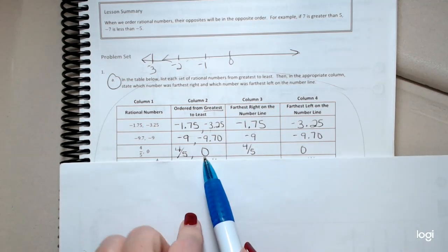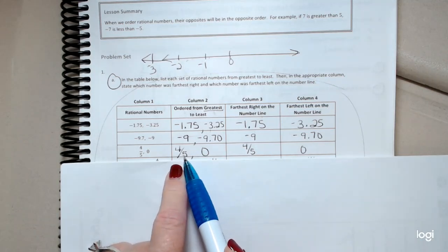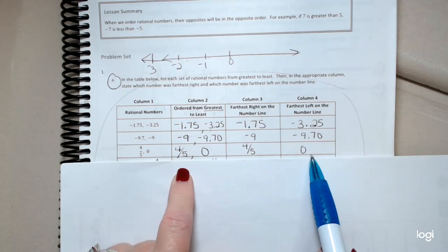Well, four-fifths is bigger than zero. And because it's bigger, it's further to the right. So we're putting four-fifths and zero.